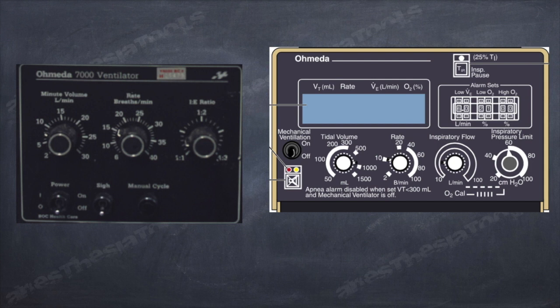In the first ventilator, we can set the minute volume and rate. Further, you have the knob to control I:E ratio also. In the next ventilator, we are asked to set the tidal volume and rate, and minute volume becomes the dependent variable. By controlling the inspiratory flow rate, we can indirectly control the I:E ratio.